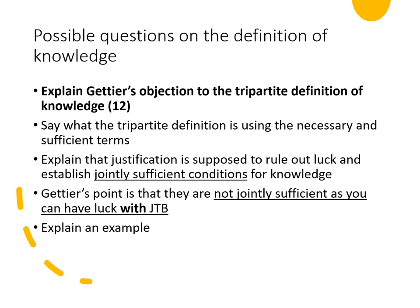There are several examples you could use. Gettier's own example is the Smith and Jones case, where two people are going for a job. Smith has been told by the president of the company that Jones will probably get the job, and he knows independently that Jones has ten coins in his pocket — so he forms the belief that the man who will get the job has ten coins in his pocket. In fact, Smith himself gets the job and coincidentally also has ten coins in his pocket. According to Gettier, Smith did not know that the man who would get the job had ten coins in his pocket, even though he had a justified, true belief.